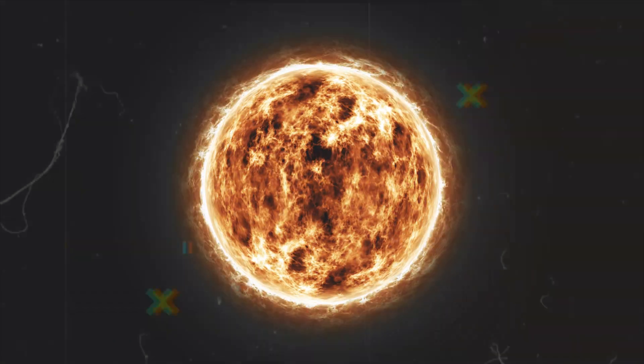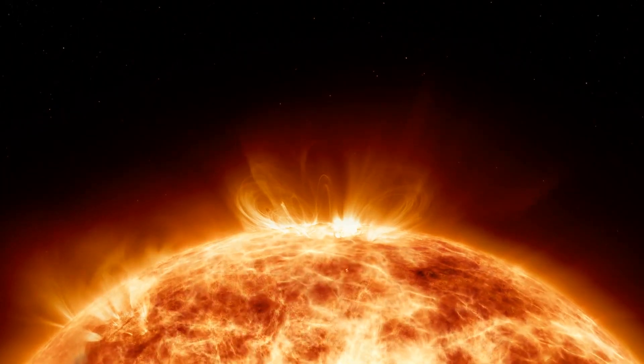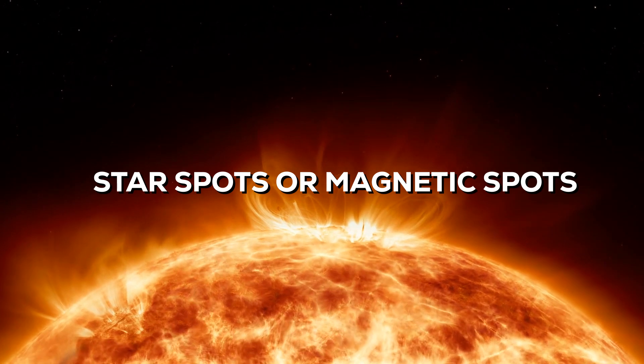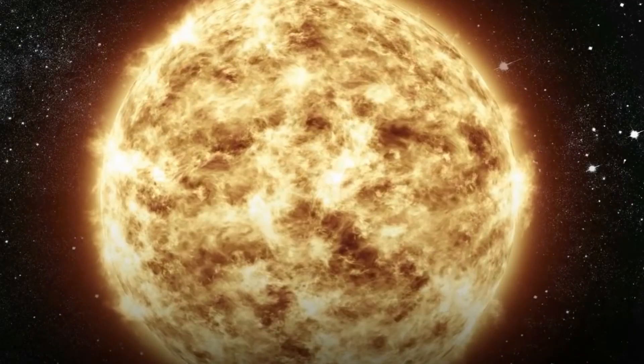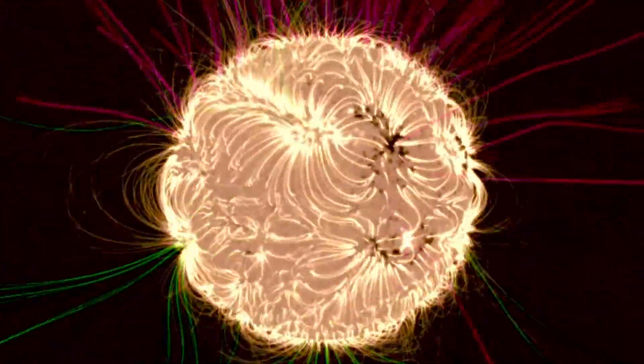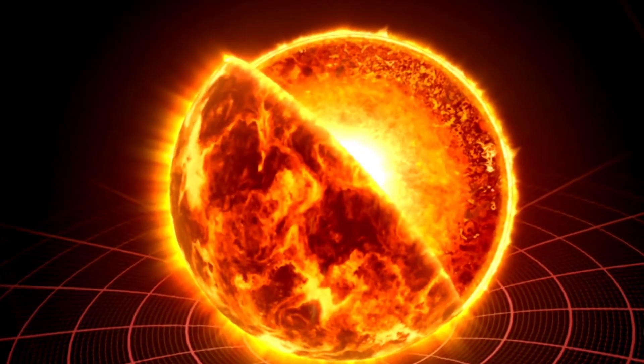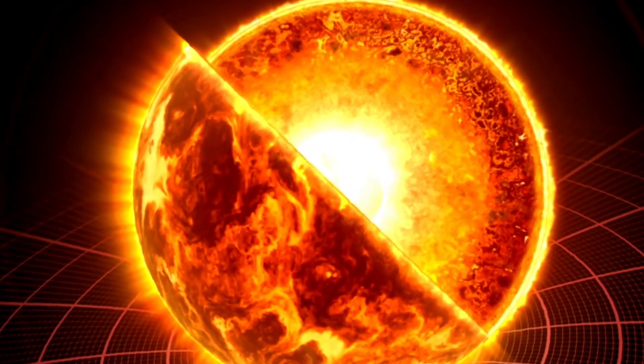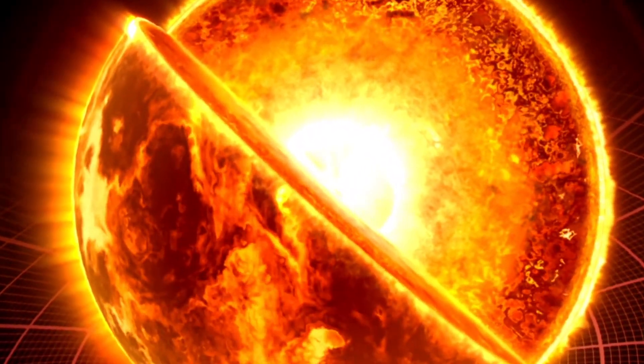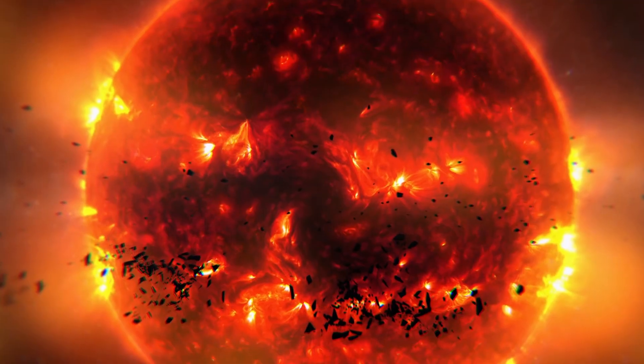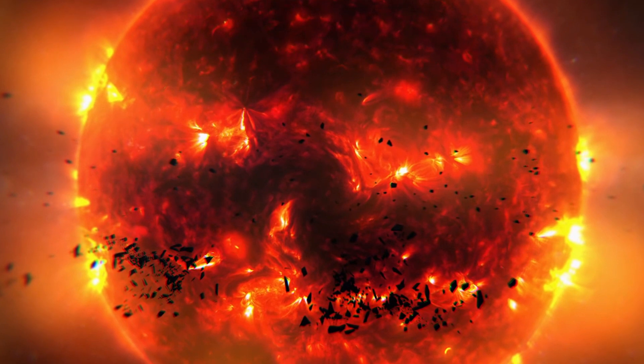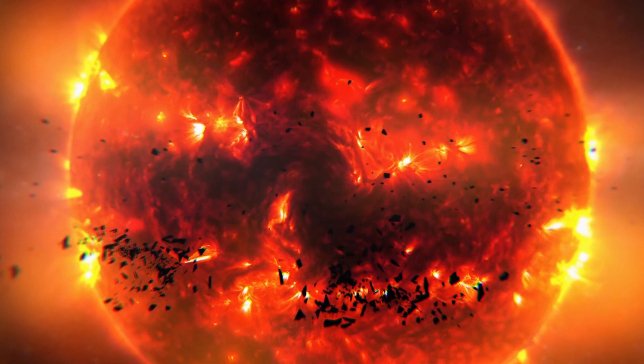Betelgeuse's surface is also covered with dark spots, commonly referred to as star spots or magnetic spots, which are regions of the star's surface with a particularly intense magnetic field. The magnetic field prevents heated gas from the star's center from flowing to its surface, making these regions colder than the surrounding gas. Consequently, the patches appear darker than the surrounding gas due to a cooling effect.